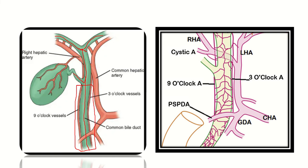During the Whipple's procedure, parts of the bile duct are cut and transected. Here in this picture we can see the common hepatic duct, the cystic duct, and they form the common bile duct, which finally opens into the second part of the duodenum. During the Whipple's procedure, this structure is cut.